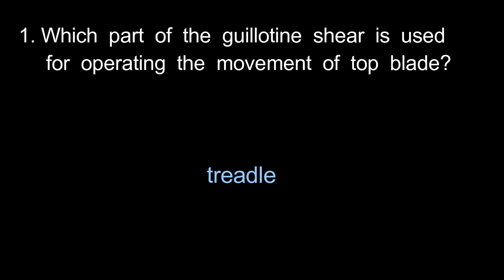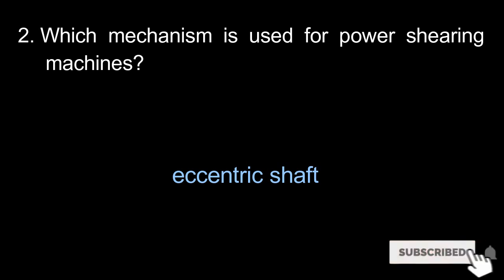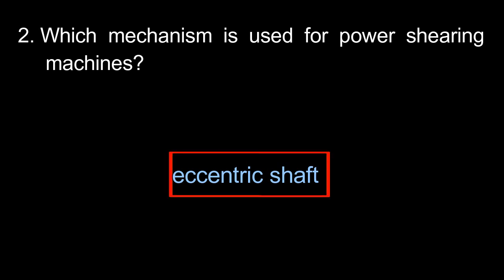Question 1: Which part of the guillotine shear is used for operating the movement of the top blade? In the power-shearing machine, this is the eccentric shaft mechanism.